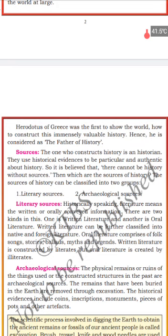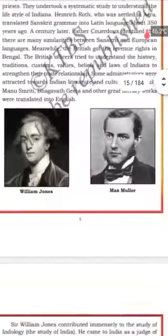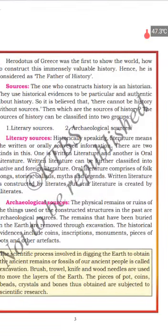Now we learn about sources: what are sources, and how did Europeans help us to write Indian history? Sources are very important for writing history. Without sources there is no history. The historian is like an advocate — just as an advocate presents their argument with evidence, the historian also writes history with the help of evidence.